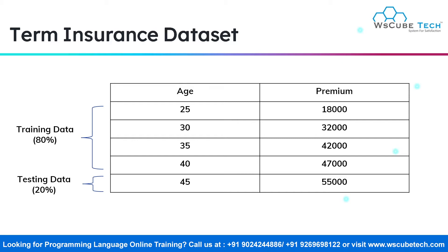In order to split our dataset into training data and test data, we need to divide our complete dataset in some ratio. If we consider the ratio as 80-20, then 80% would be the training data and the remaining 20% would be the testing data. This testing data acts as new data for our model, since the model has not seen it before. For example, with 5 records, 80% of 5 is 4 records for training, and the remaining 20% — which is 1 record — will be used to test our model.